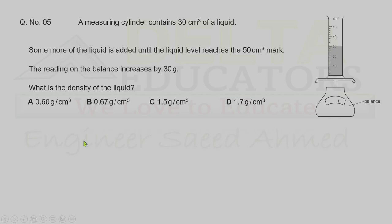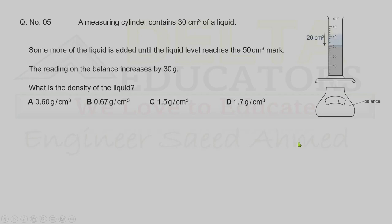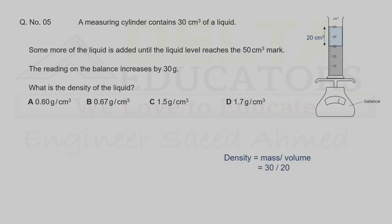Question 5. A measuring cylinder contains 30 cm³ of liquid. More liquid is added until the level reaches 50 cm³, and the balance reading increases by 30 grams. What is the density? The increase in volume is 50 − 30 = 20 cm³. Using density = mass/volume: 30/20 = 1.5 g/cm³. Correct option is C.